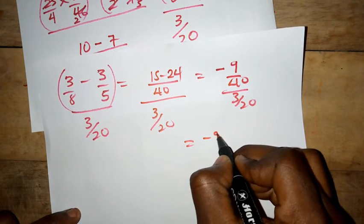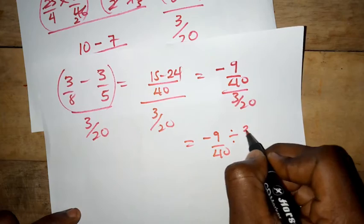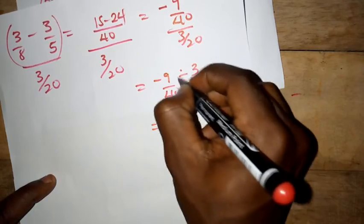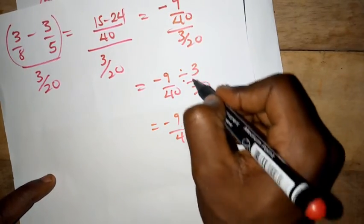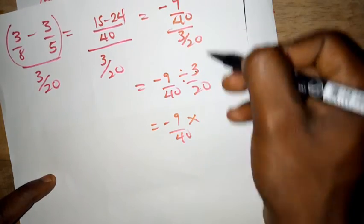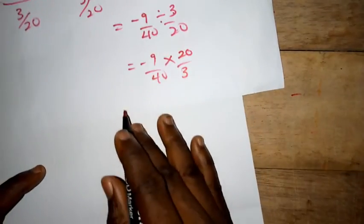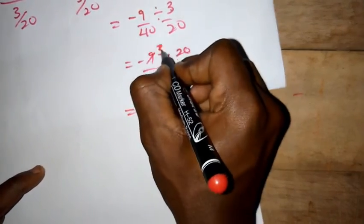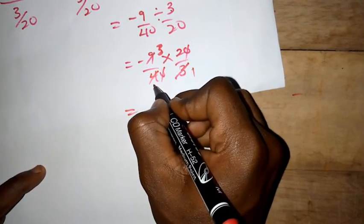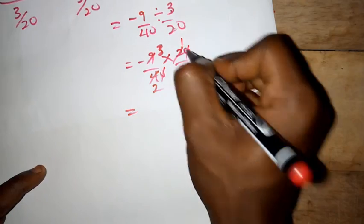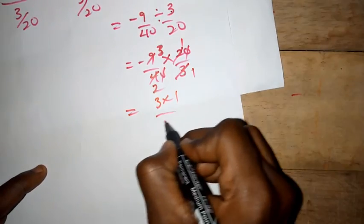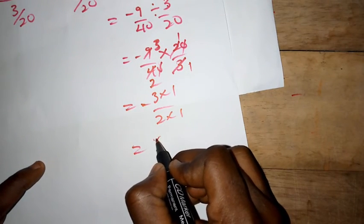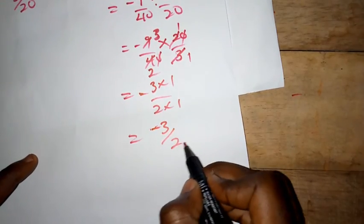We have negative 9 over 40 divided by 3 over 20. Changing the division to multiplication, we interchange — so we get 20 over 3. Three goes into itself once, 2 goes into 2 once. So we have 3 times 1 over 2 times 1. Don't forget the negative — so the final answer is negative 3 over 2.